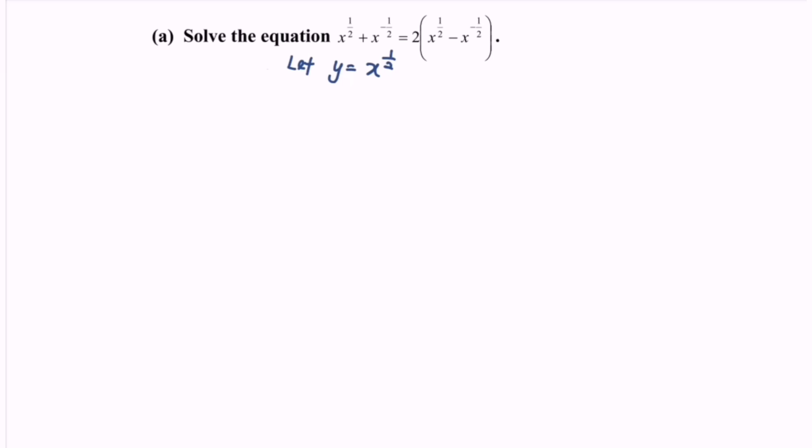So we can replace or substitute the situation and it will become y plus y to the power of negative 1 equals to 2 multiplied with y minus y to the power of negative 1.